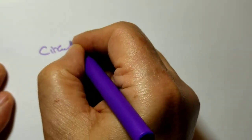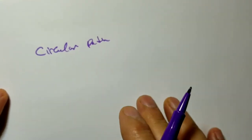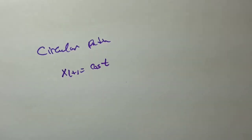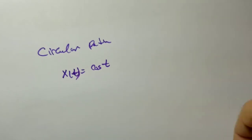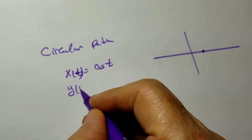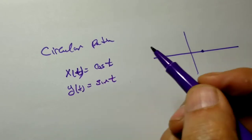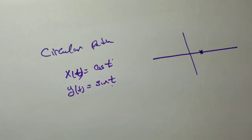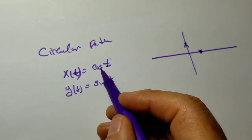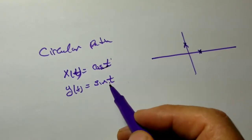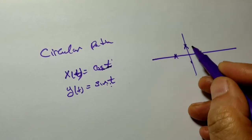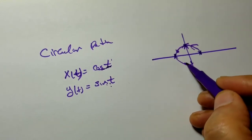Next, let's talk about a circular path. A circular path is defined by x of t equals cosine of t and y of t equals sine of t, because sine and cosine are called circular functions. When t is 0, you get (1, 0). When t is pi over 2, you get (0, 1). When t is pi, you get (negative 1, 0). When t is 3pi over 2, you get (0, negative 1). You can see the orientation and the circular path.